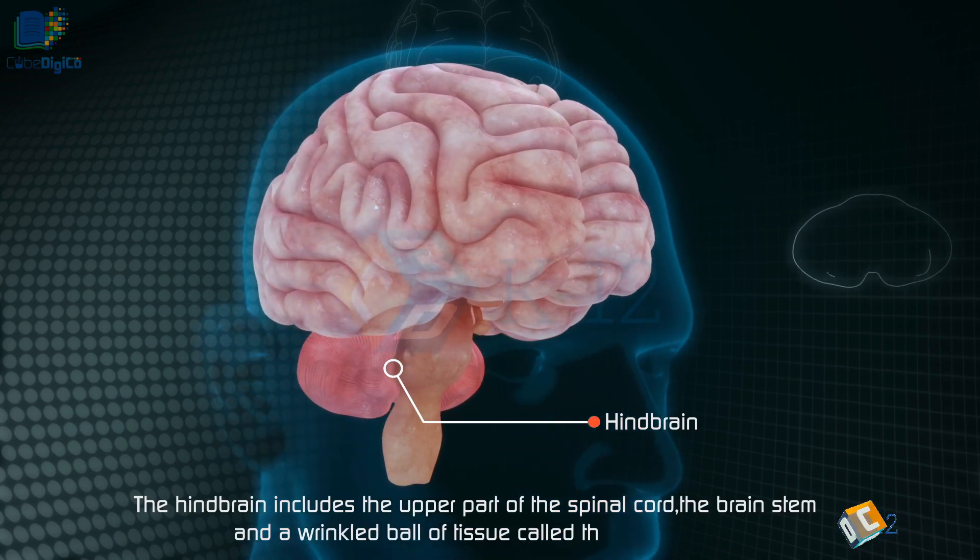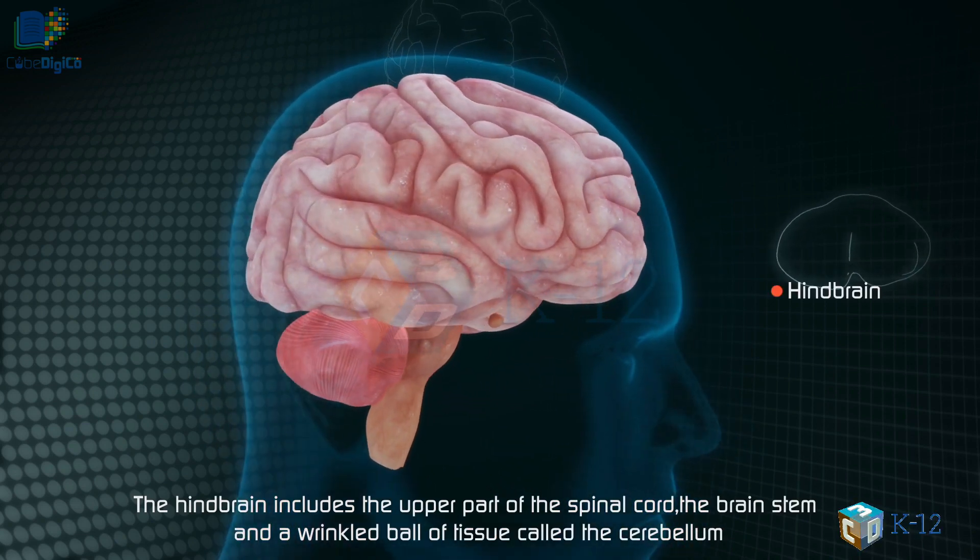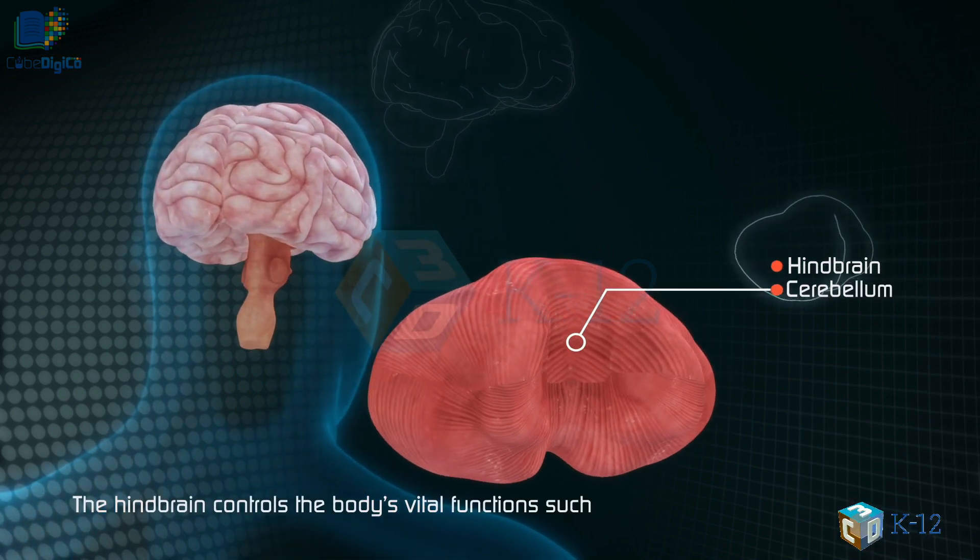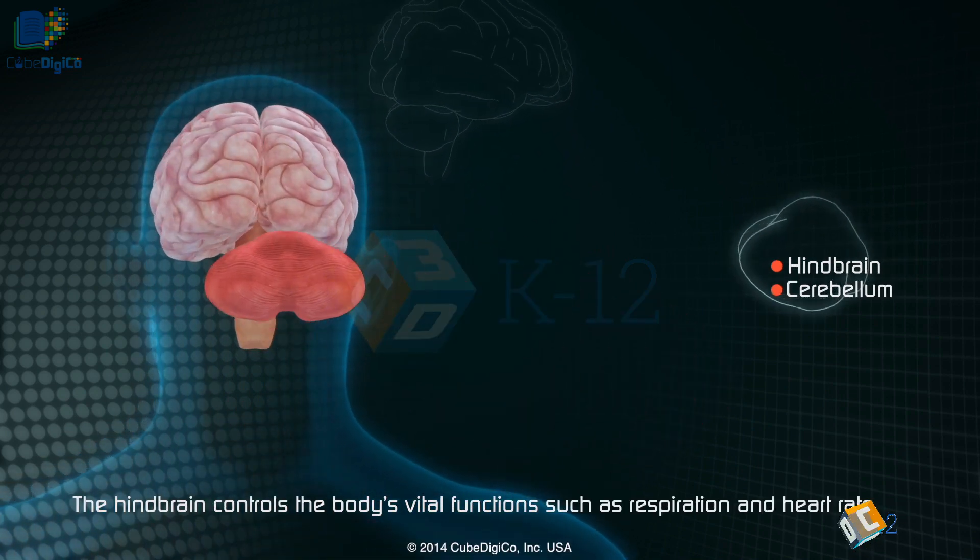The hindbrain includes the upper part of the spinal cord, the brain stem, and a wrinkled ball of tissue called the cerebellum. The hindbrain controls the body's vital functions such as respiration and the heart rate.